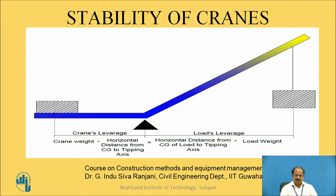You can see there is a crane's lever arm and load's lever edge on the left and right side respectively. Crane weight multiplied by horizontal distance from centre of gravity to tipping axis must be equal to horizontal distance from centre of gravity of load to tipping axis, multiplied by load weight.